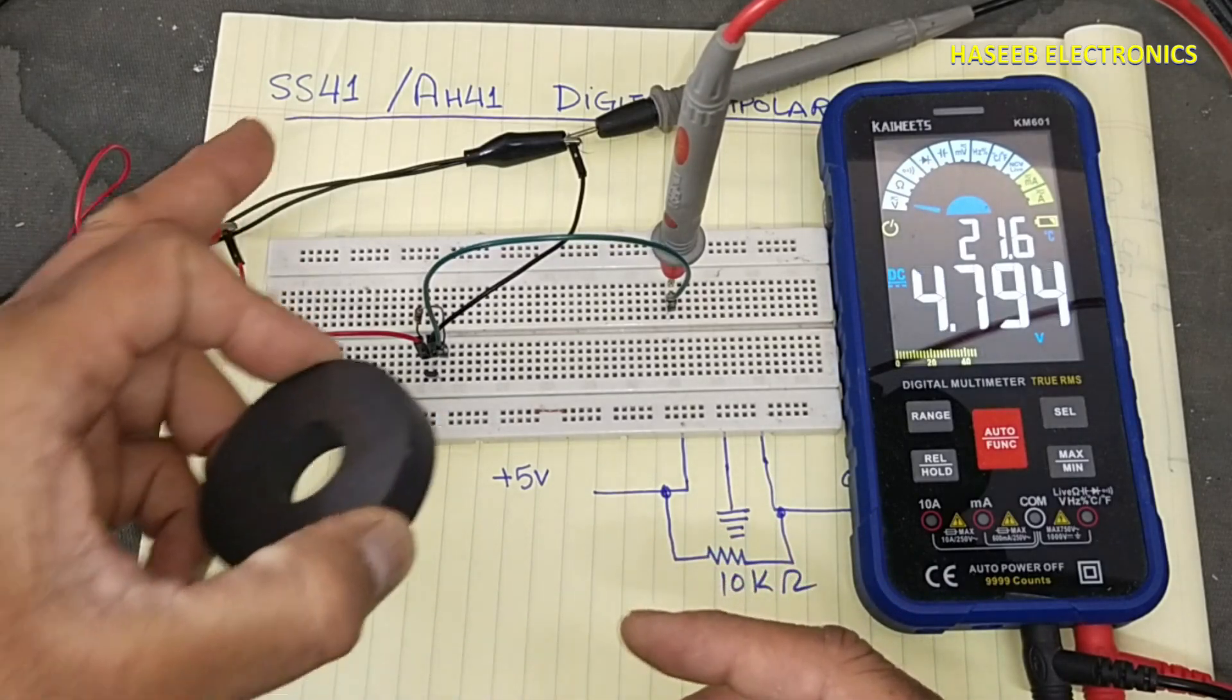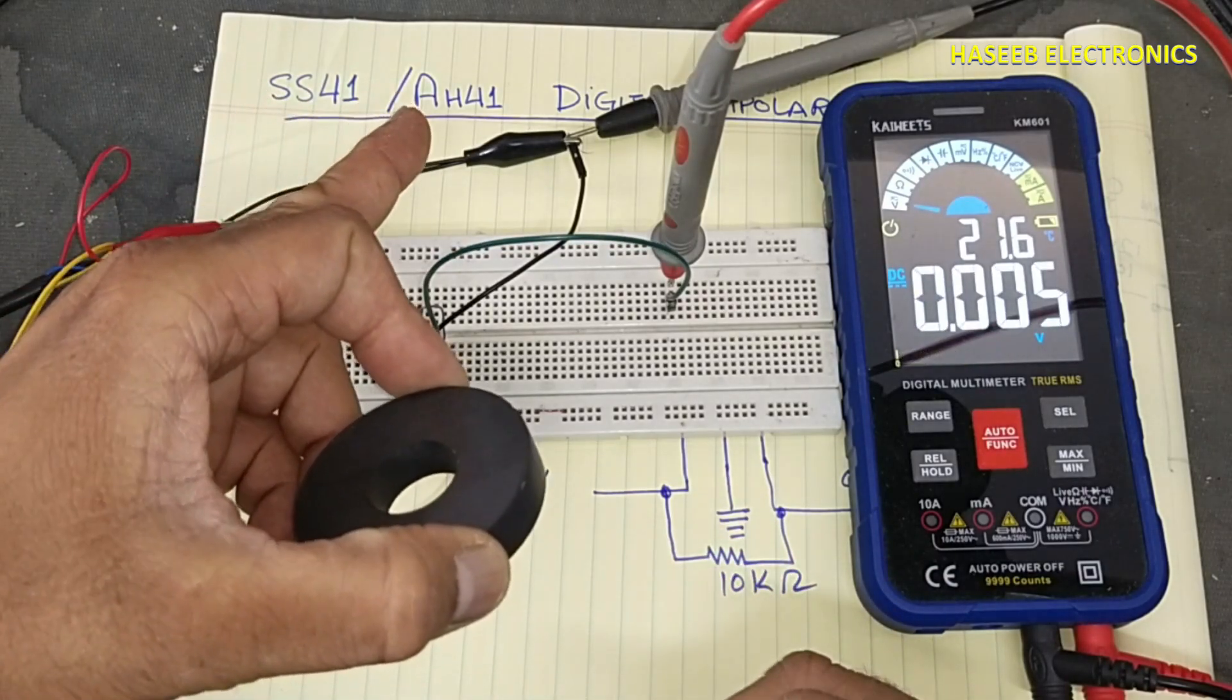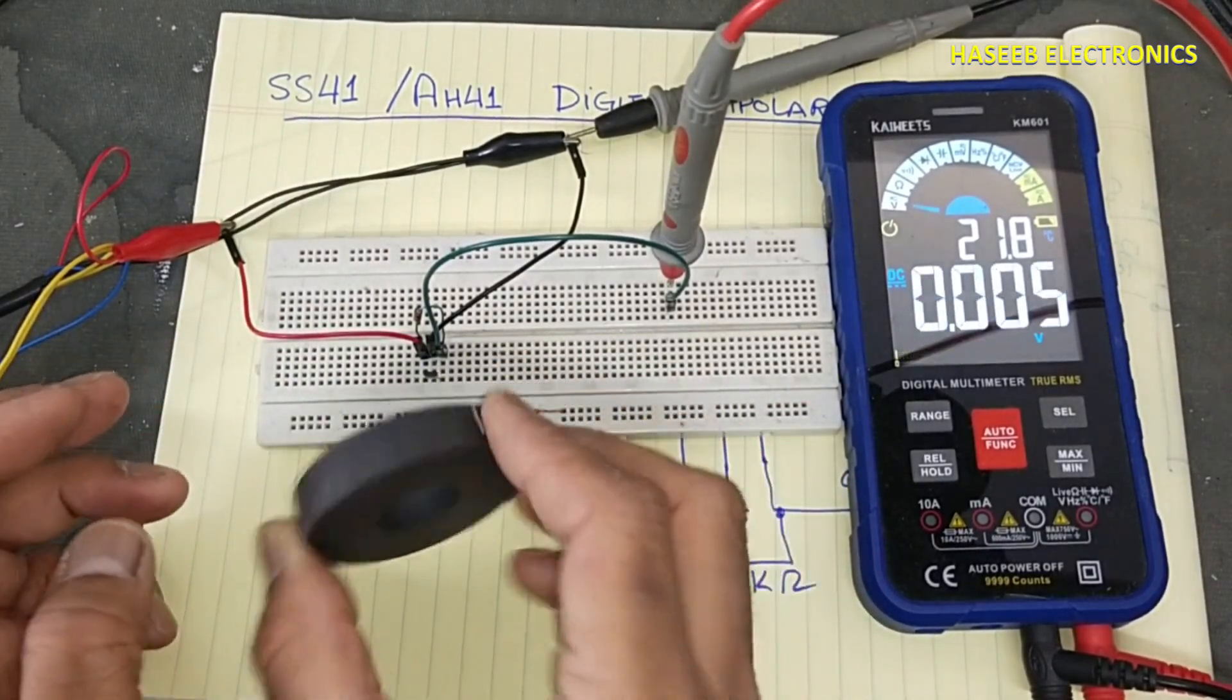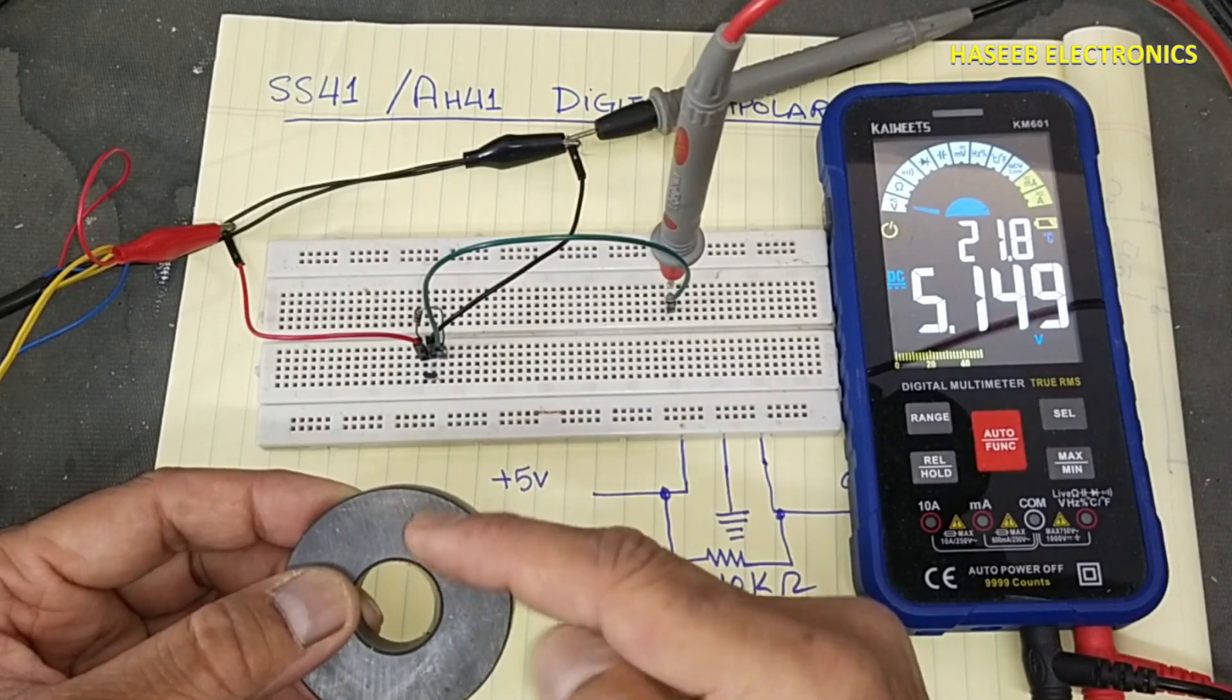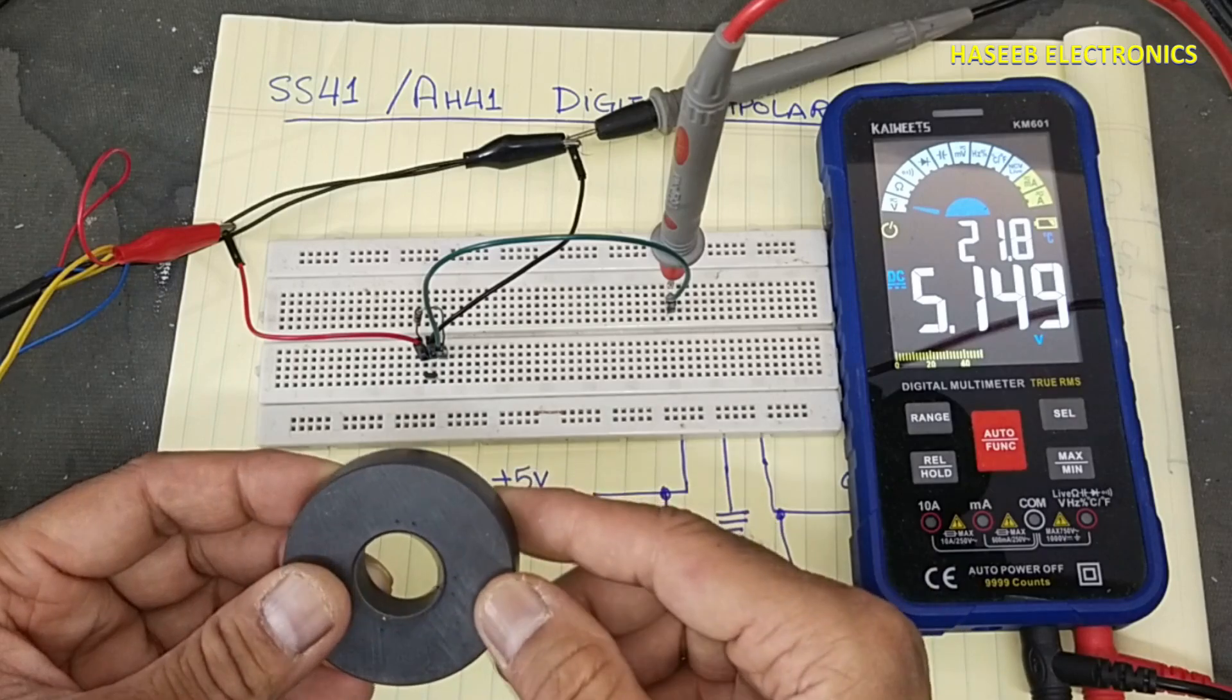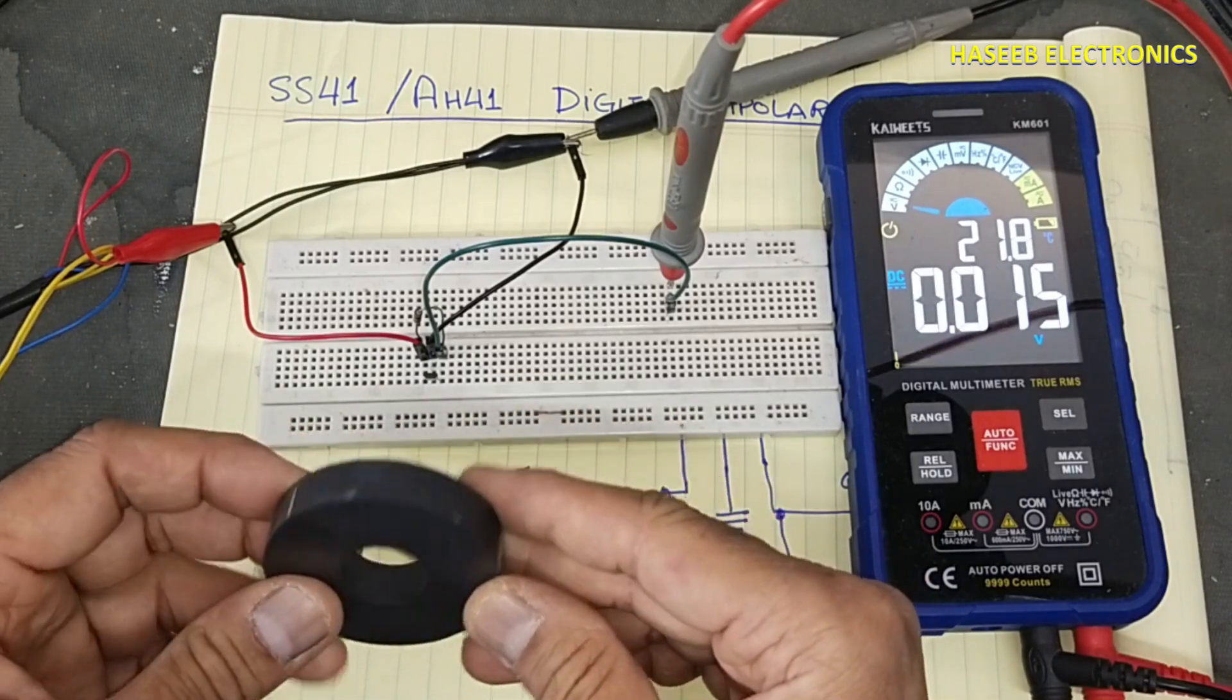In this way we can verify the function of this hall effect sensor and use it in our projects. Its part number is SS41 or AH41, physical number 41. This sensor is sensing the magnetic lines of force which are traveling from north to south pole of this magnet.